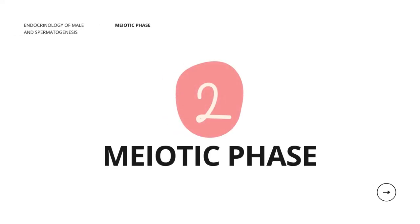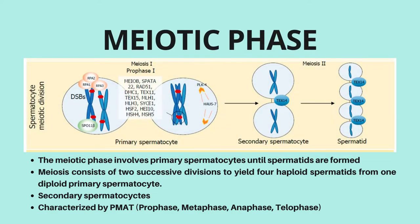The meiotic phase involves primary spermatocytes until spermatids are formed. During this process, chromosome pairing, crossover, and genetic exchange take place until a new genome is determined. Meiosis consists of two successive divisions to yield four haploid spermatids from one diploid primary spermatocyte. After the first meiotic division — the reduction division — each daughter cell contains one partner of the homologous chromosome pair, and they are called secondary spermatocytes.